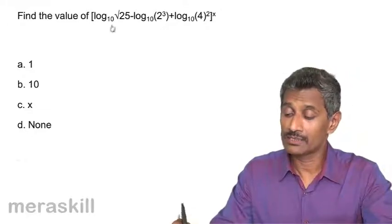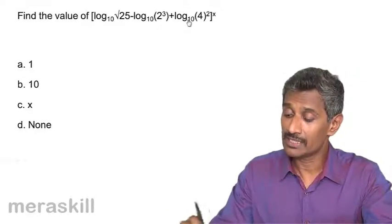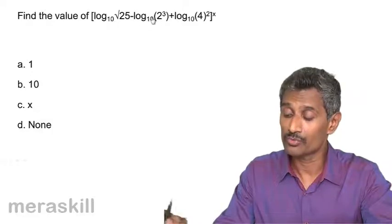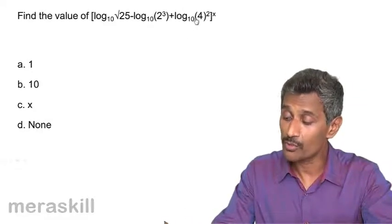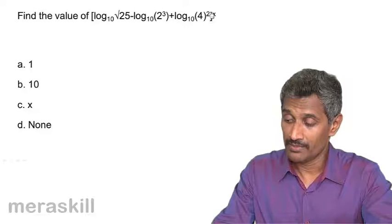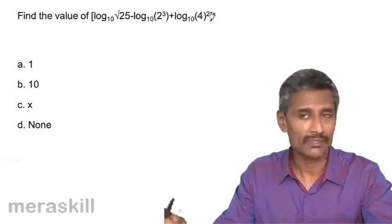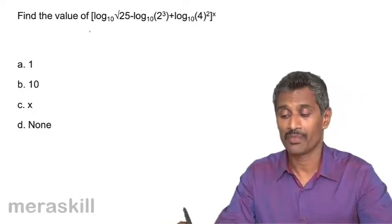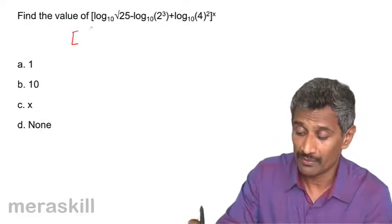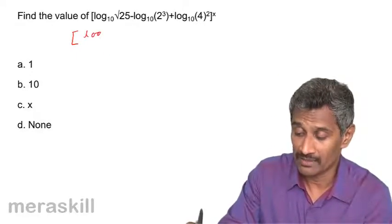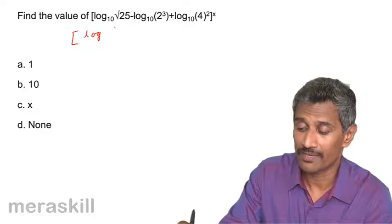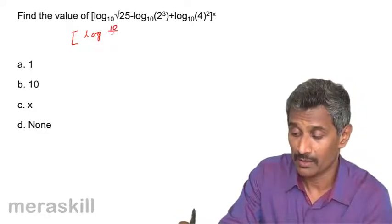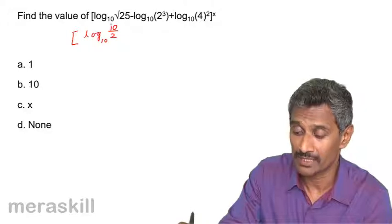The next problem is concerned with the expression: log of root 25, minus log of 2 cubed, plus log of 4 squared, all to the base 10, the whole raised to the power x. We will write log of root 25 as log 5, which is log(10/2) to the base 10.